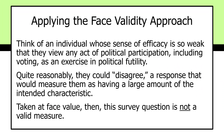It bears emphasizing that once you realize you have a systematic measurement error and an invalid measure, you don't know how many people were affected — how many inefficacious people disagreed, how many efficacious people disagreed. If you knew that, you could adjust the measure and remove the bias, but since we don't know, we have to get rid of the question. It's just not a valid measure.